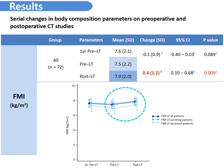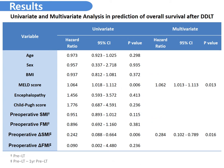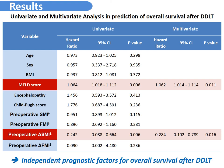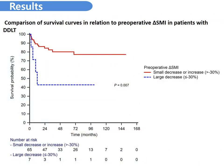However, there was a significant increase in the FMI during the postoperative period. Univariate and multivariate analysis revealed that the preoperative delta SMI and MELD score were independent prognostic factors for overall survival after DDLT. The survival rate for patients with a large decrease in the preoperative delta SMI was lower than those for patients with a small decrease or increase in the preoperative delta SMI.